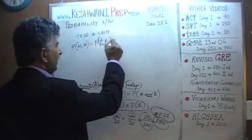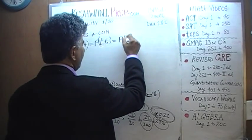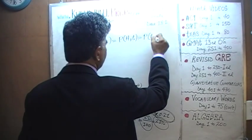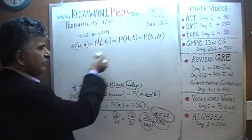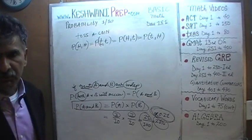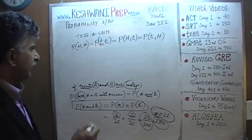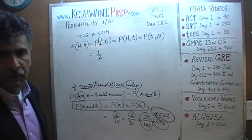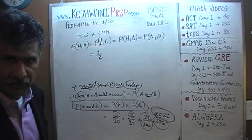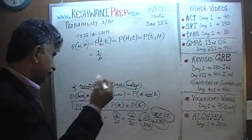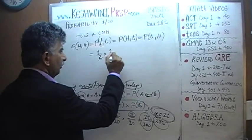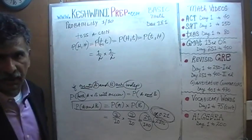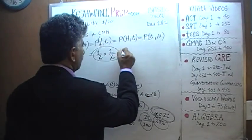The odds of getting two heads in a row, two tails in a row, or a head then a tail, or a tail then a head — all are equal to each other. Because in each case, every time you toss a coin the odds are 50% of getting either outcome, and the second toss is also 50%. Therefore it doesn't matter which combination you're looking at — the odds are one quarter.